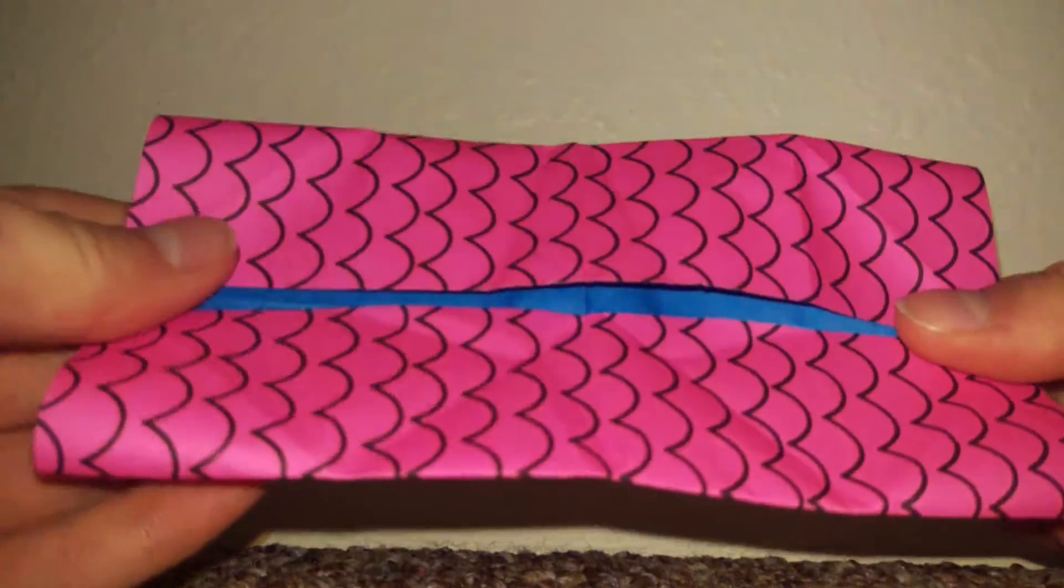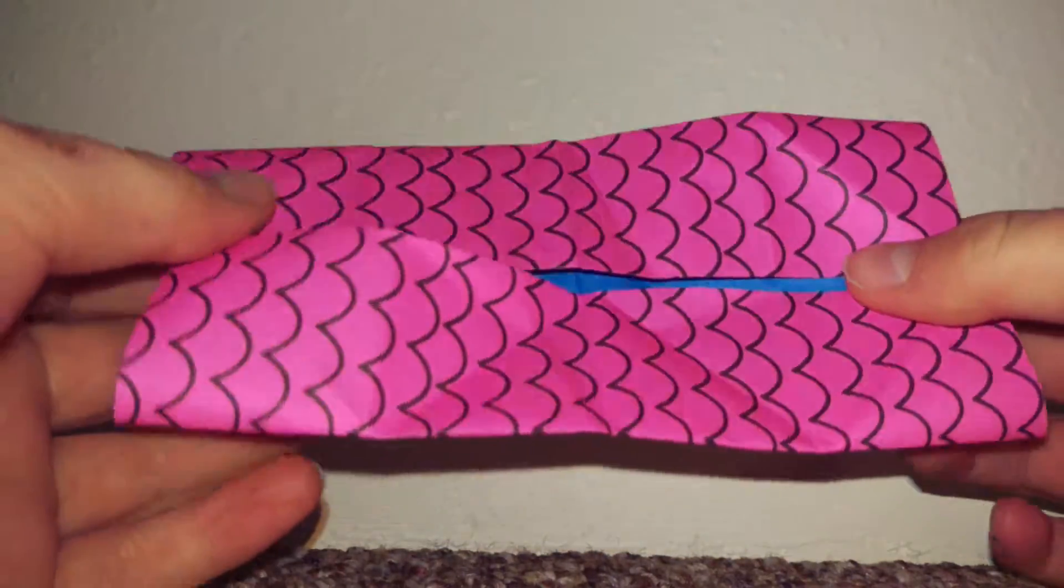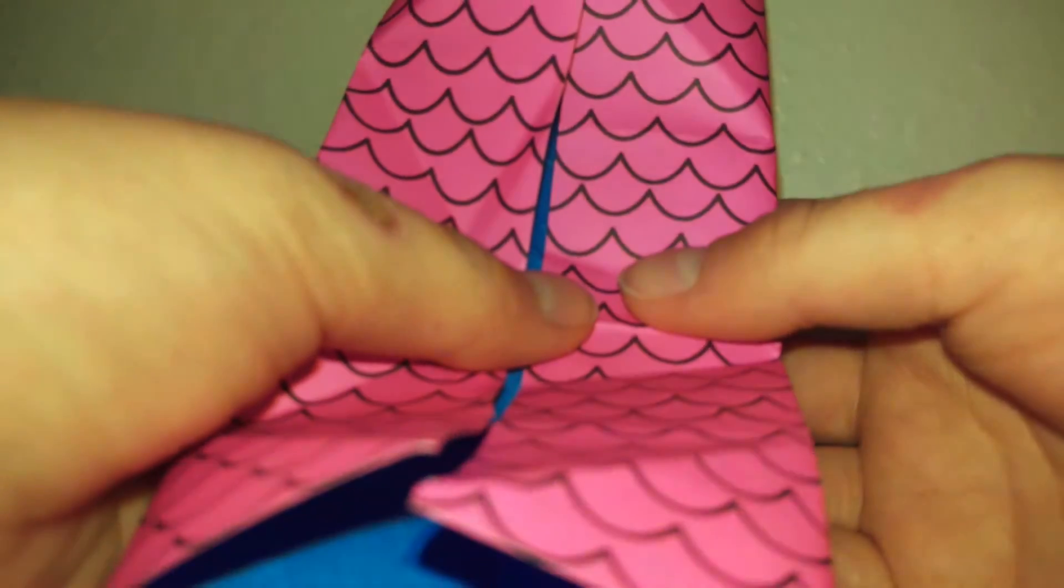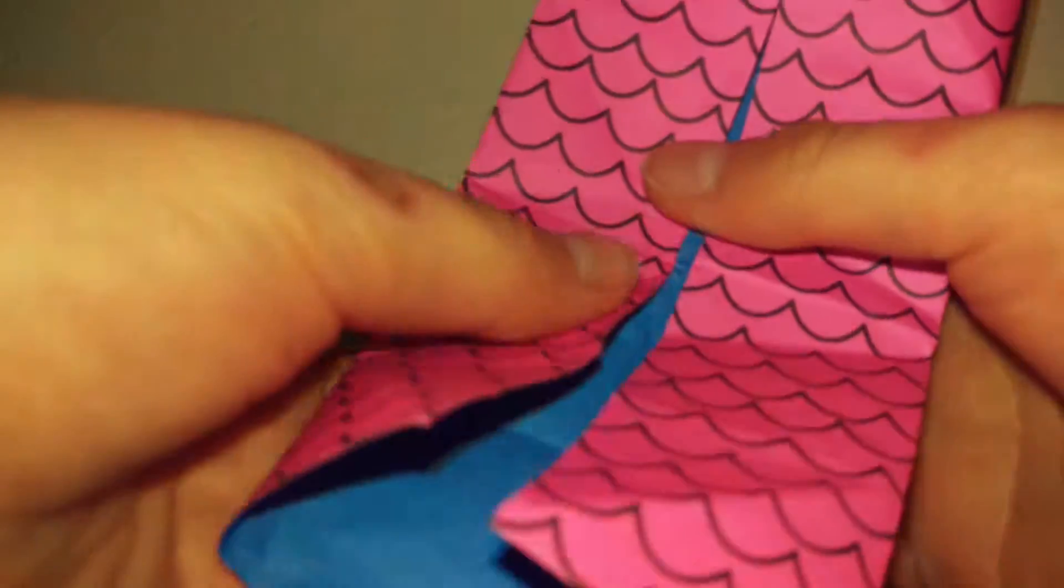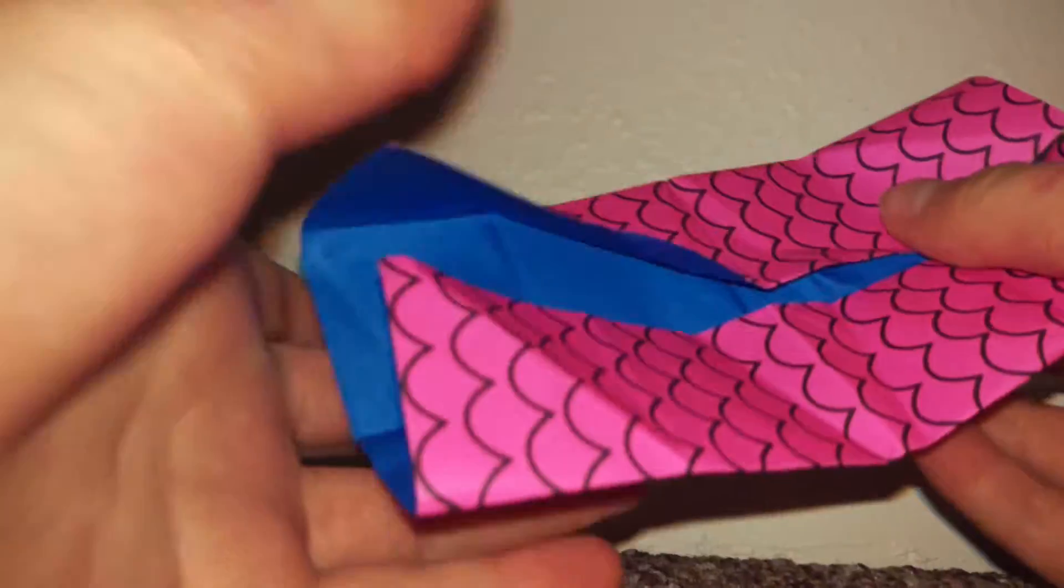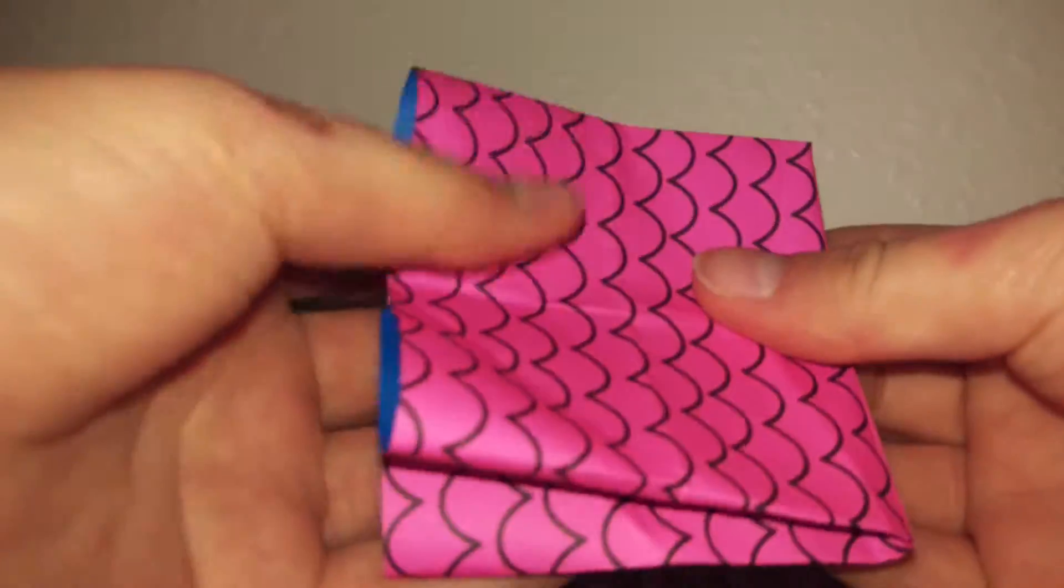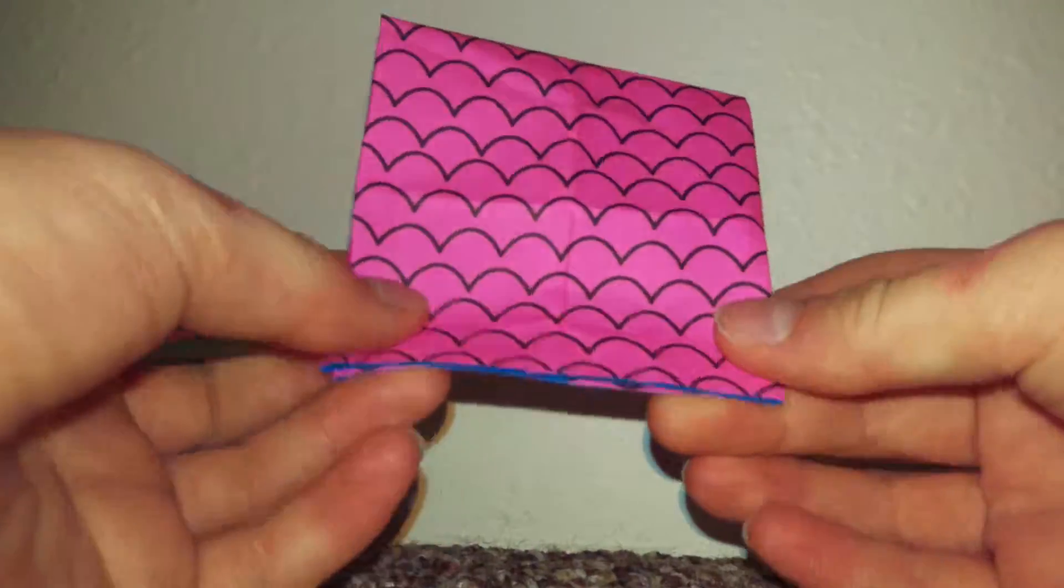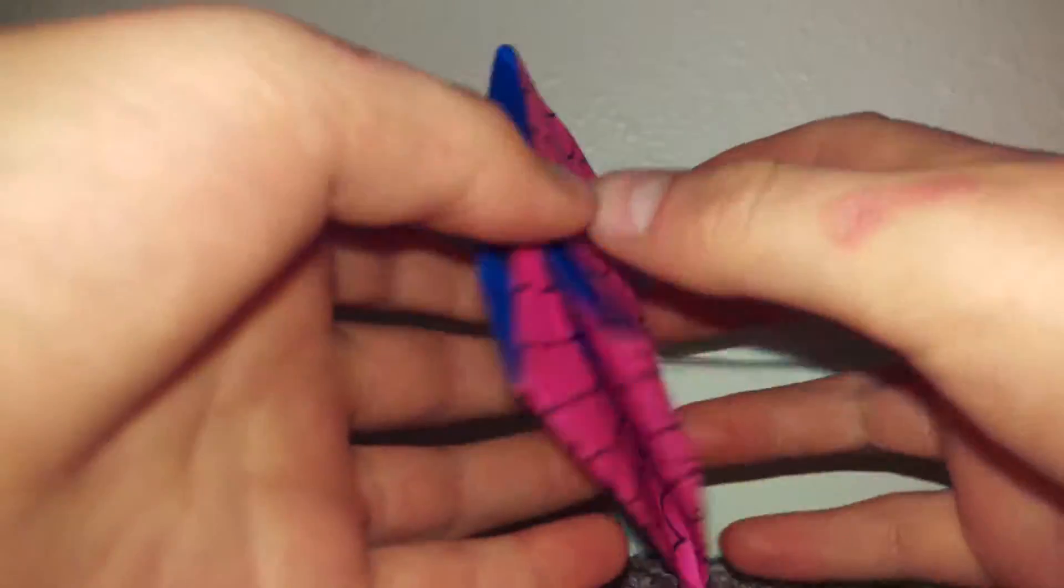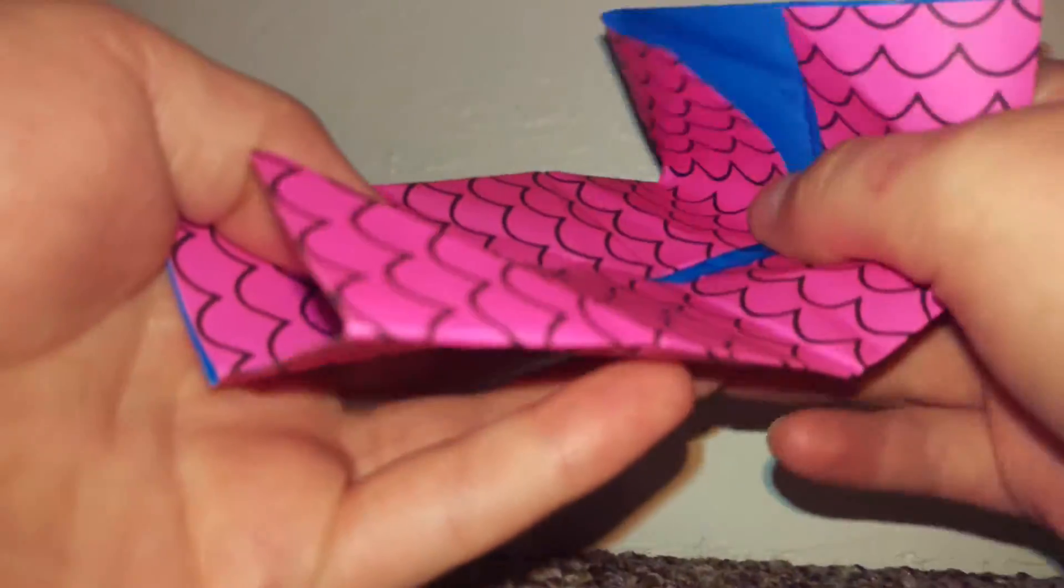So go straight to the middle and then from there fold it in half. So take it from there, fold it in half so you have a square, and then fold that out and fold these in.